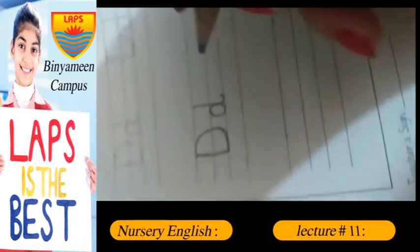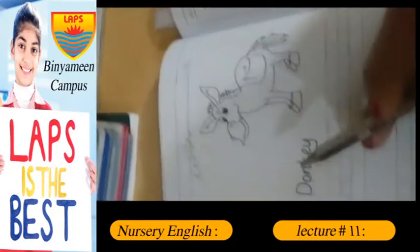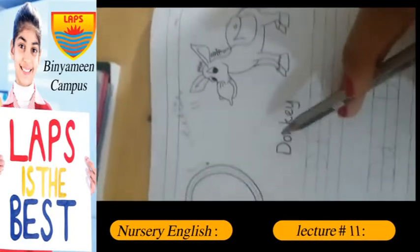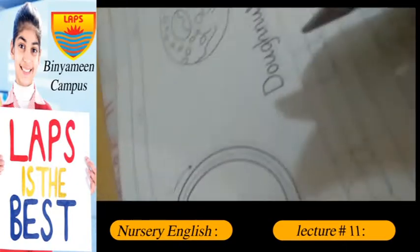It's a small D. D for donkey — D, donkey, D, donkey, D.